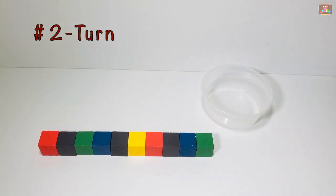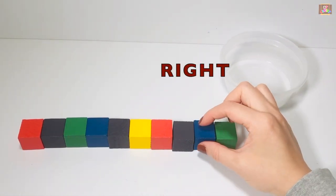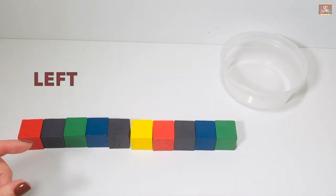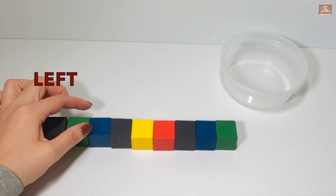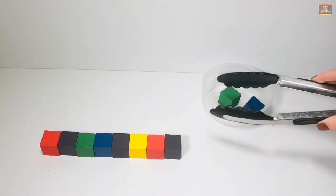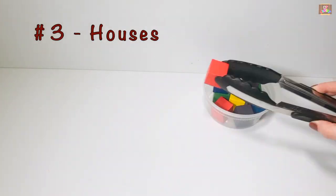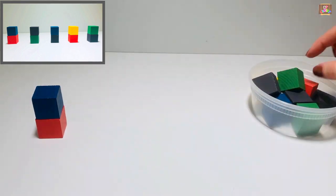Game number two: turn five blocks using your right hand, turn five blocks using your left. Use the tongs to clean up your blocks. Game number three: build five houses with each house having two blocks.